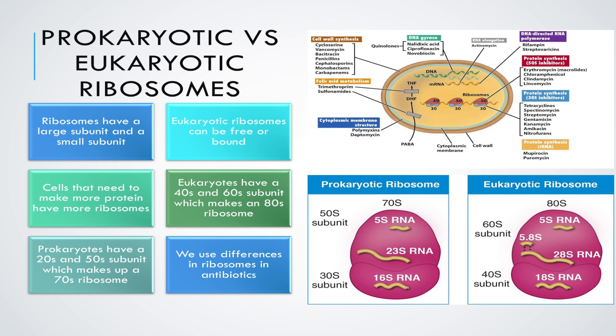Something to mention is that eukaryotic ribosomes may be either free, meaning that they're floating around in the cytoplasm, or they may be bound, meaning that they're attached to the rough endoplasmic reticulum or outside the nuclear envelope. If you're interested in learning about bound ribosomes, I will link a video about bound ribosomes on the rough endoplasmic reticulum.